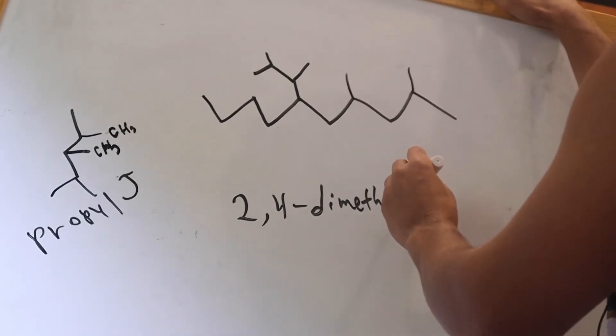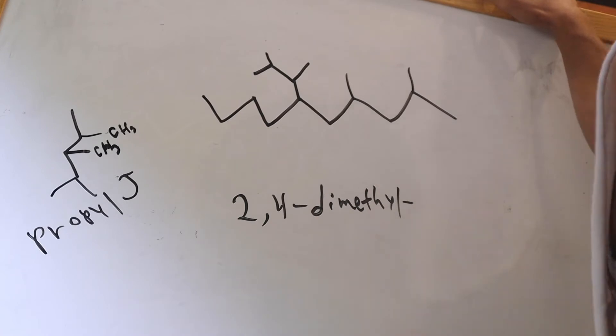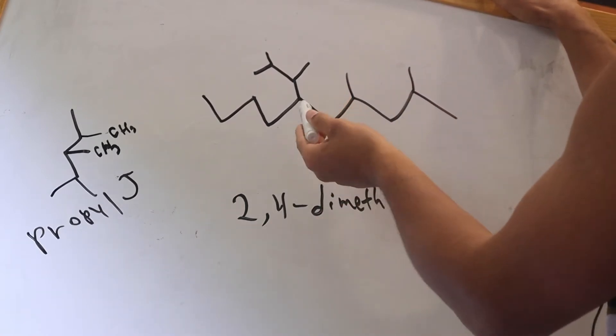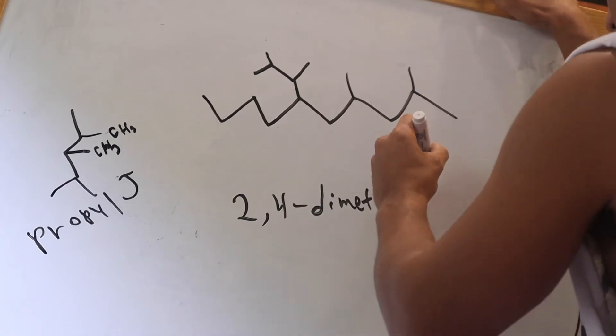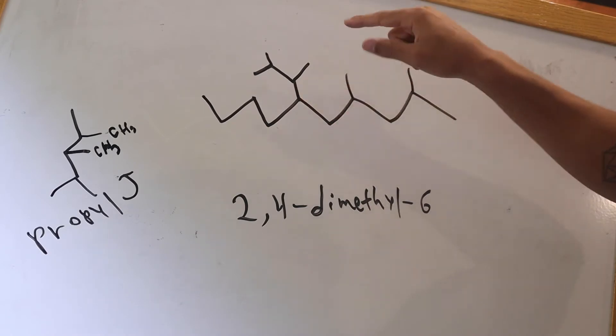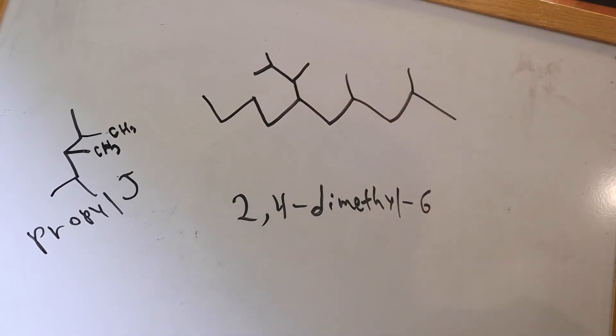And then now what you're going to want to do is do another dash and now count 1, 2, 3, 4, 5, 6. The next functional group is on carbon 6. But here's the thing, the functional group on carbon 6 is a propyl group, right?